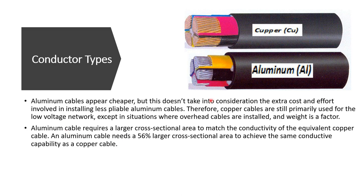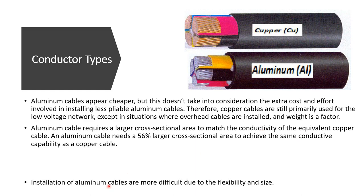To carry the same current as copper, aluminum requires a larger cross-sectional area — approximately 56% larger — to match the conductivity of the equivalent copper cable. For example, if 50 amperes are needed, the aluminum conductor must have a much higher cross-sectional area than the copper equivalent. This also makes aluminum cables more difficult to install due to their size and reduced flexibility.